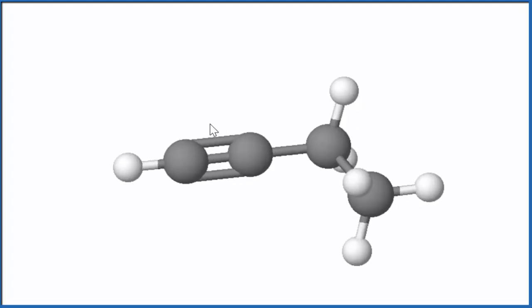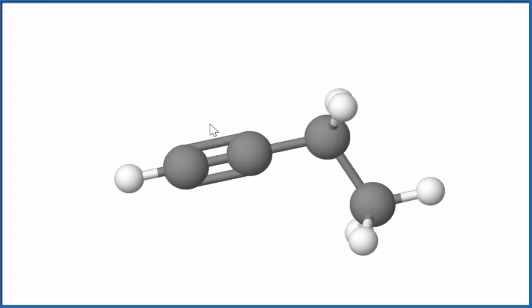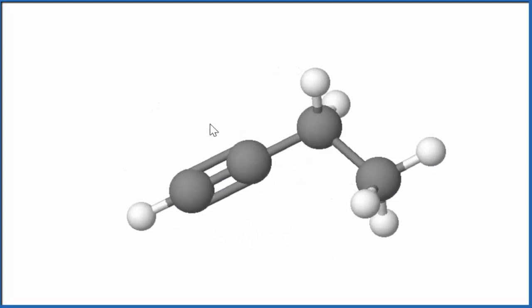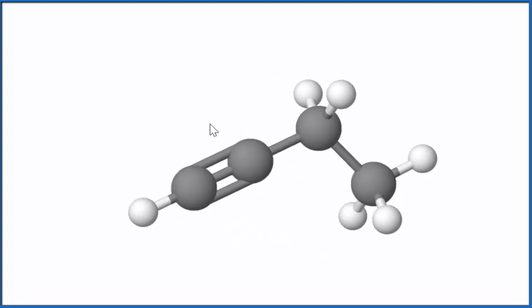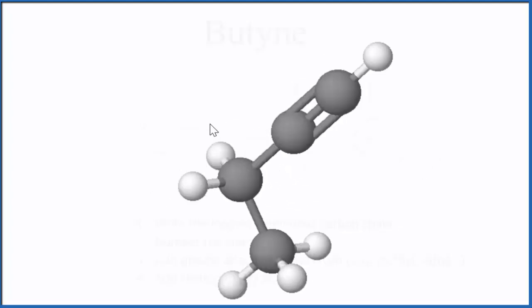Note that we have the triple bond on the first carbon here. If we had the triple bond here instead, we would still count this as the first carbon. So it would be the same molecule. So we don't have 1-butyne. We usually just write butyne. If we put it here though, that would be 2-butyne. Let's go back.